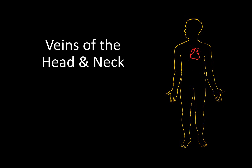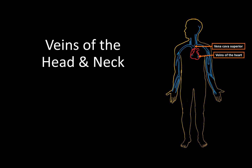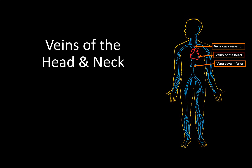Hello and welcome to another video. In this video we're going to look at the veins of the head and neck — specifically the external veins of the head and the veins of the neck that drain directly into the external and internal jugular veins. At the end of this video you will find a quiz. The venous system is divided into four systems: the veins of the heart, the veins of the vena cava superior, the veins of the vena cava inferior, and the portal system. Our focus in this video is the superficial veins of the head and neck, which drain into the vena cava superior.